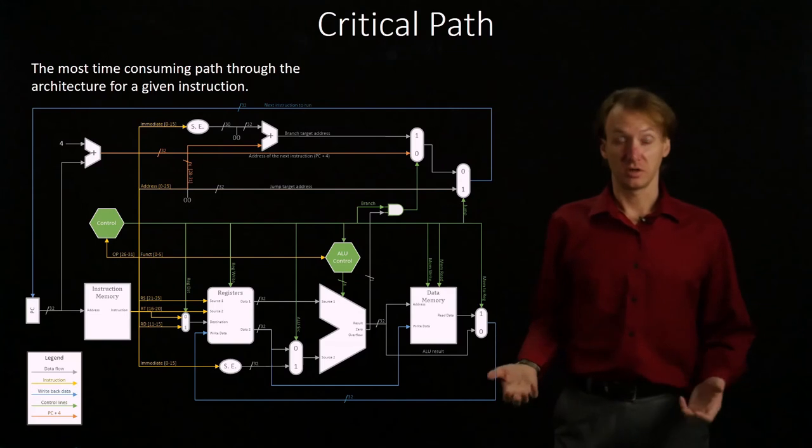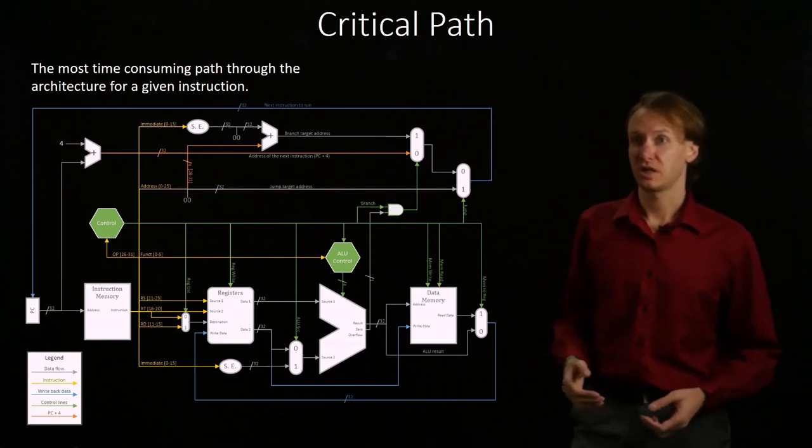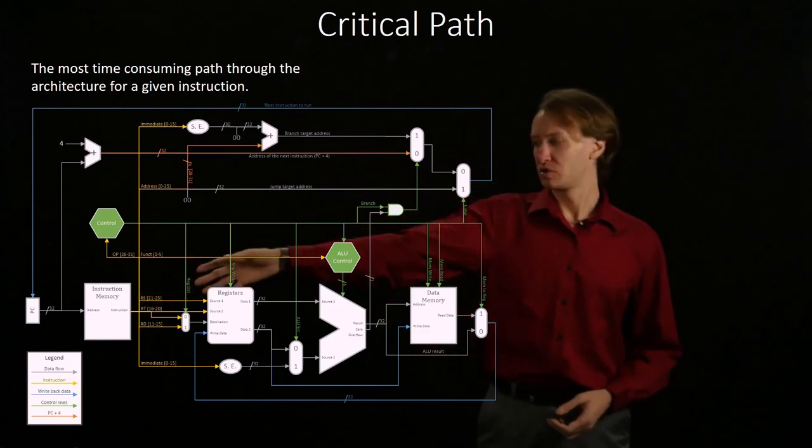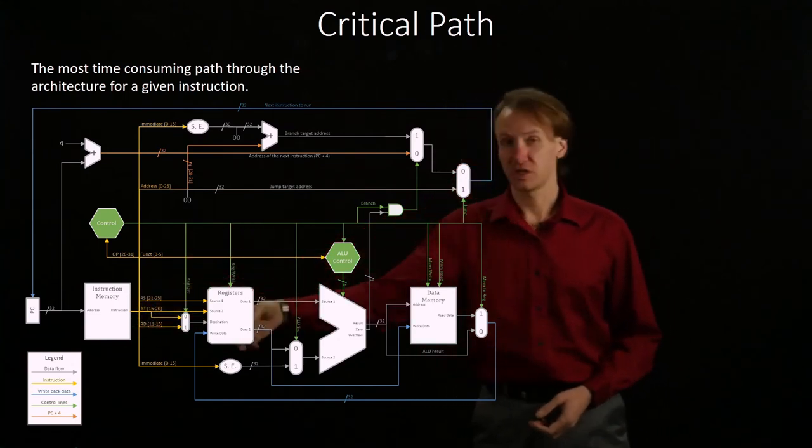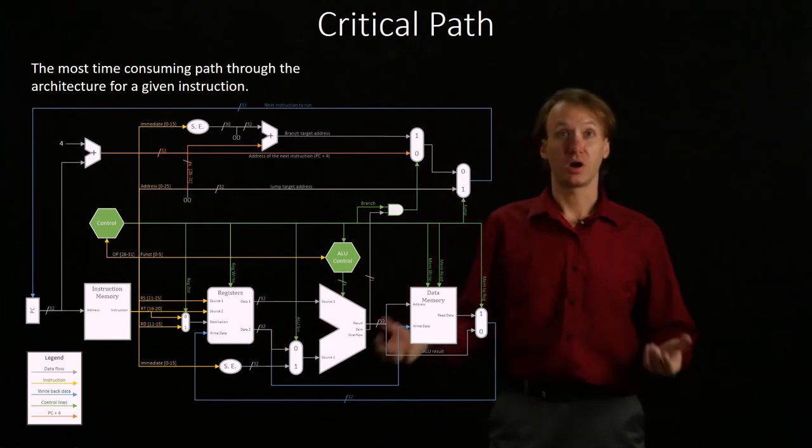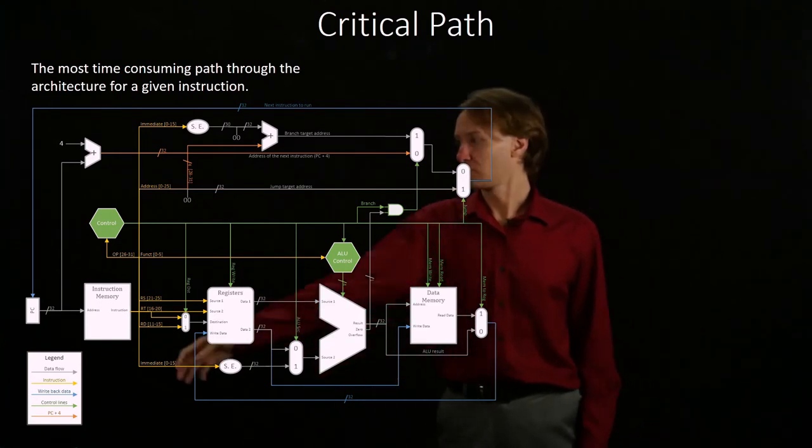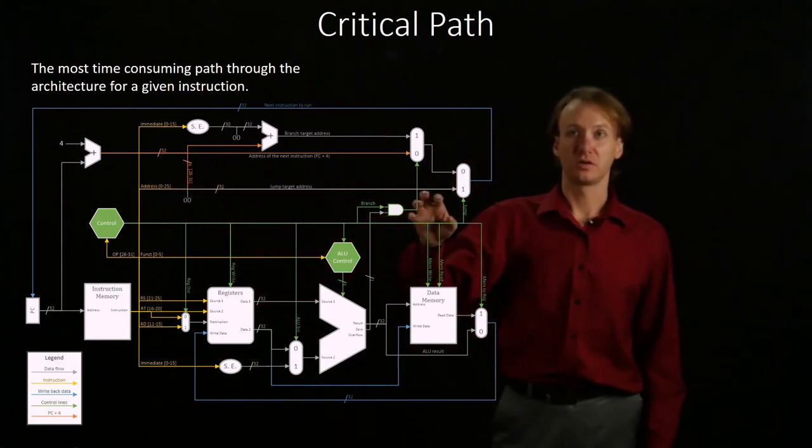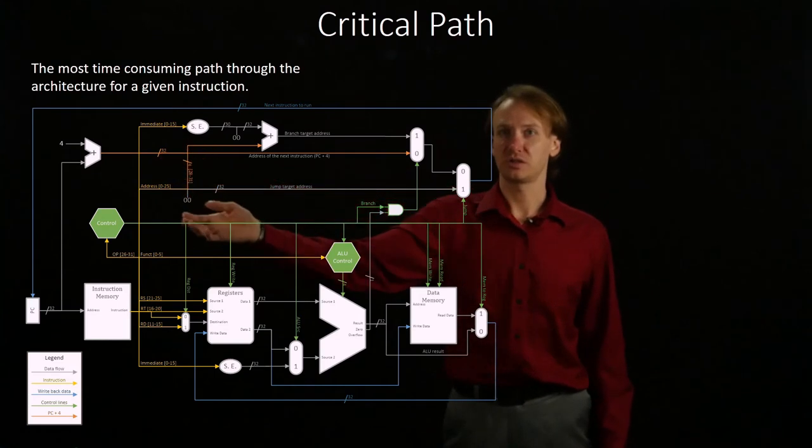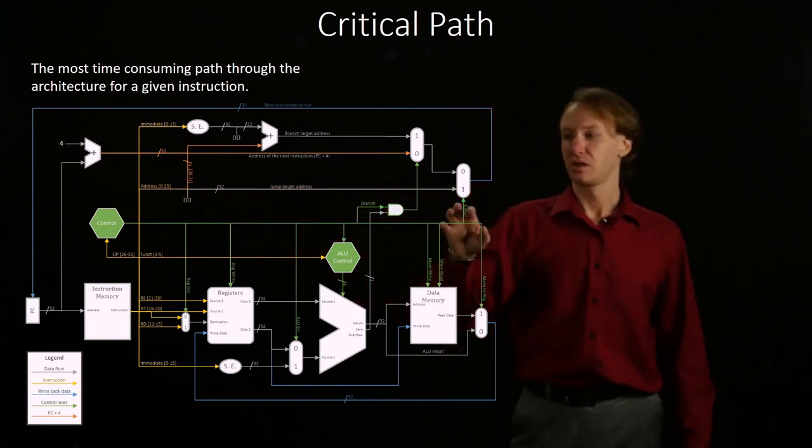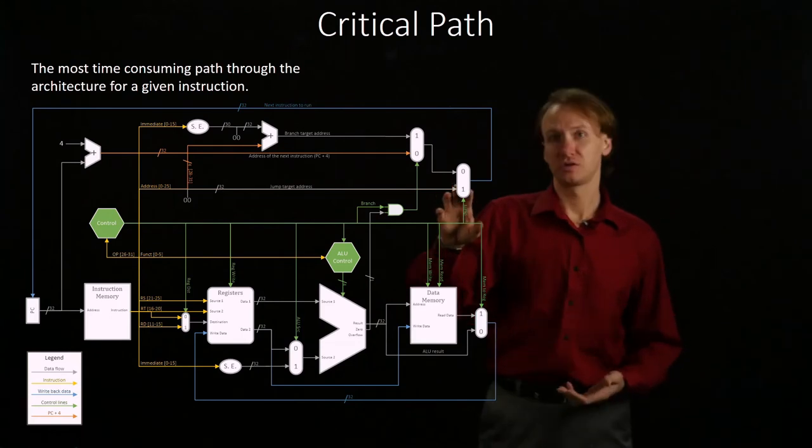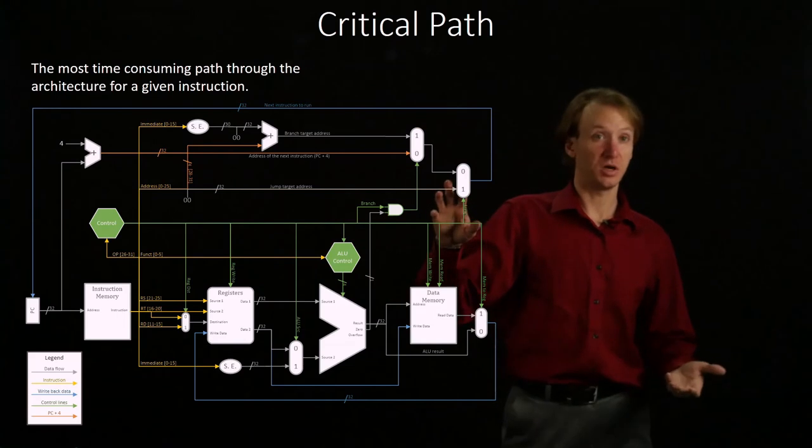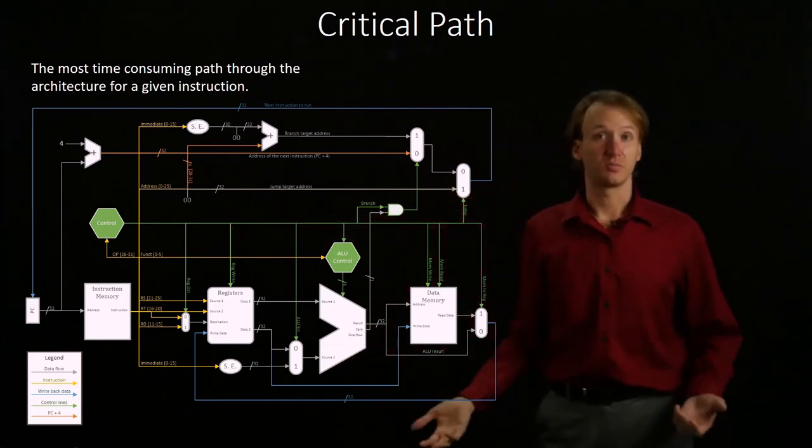A jump instruction is really simple, though. In this case, we want to update our program counter. We start with our program counter, we get our instruction out of memory, and then we process it. Really, all it does is it's going to go up here and get modified a little bit with the address of the next instruction as well as adding in a couple of zeros. Then it gets passed to the jump multiplexer. Jump multiplexer requires the signal from the control unit to say that, yes, we should take this jump, and then it writes the results back to the program counter.